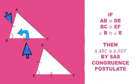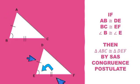Ang angle B ay ang included angle ng side AB at side BC. At ang angle E ay ang included angle ng side DE at ng side EF. Since meron tayong dalawang congruent sides at isang included angle, therefore, triangle ABC is congruent to triangle DEF by SAS congruence postulate.